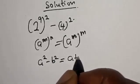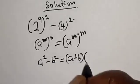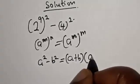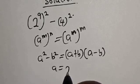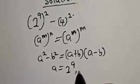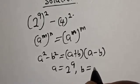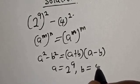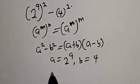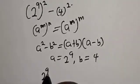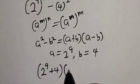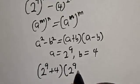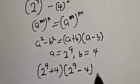Remember the rule that a squared minus b squared is equal to a plus b, multiplied by a minus b. Here, a is equal to 2 raised to power 9, and b is equal to 4.